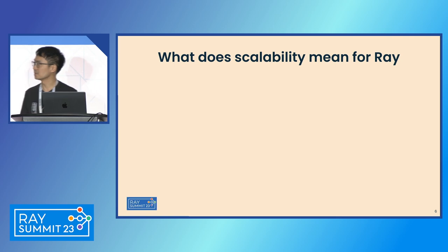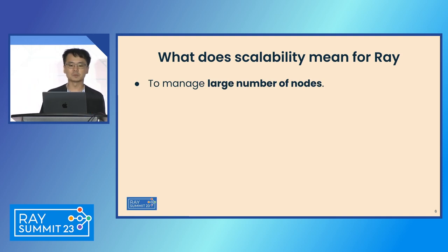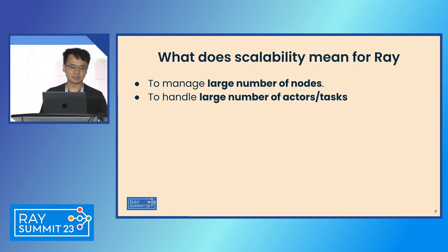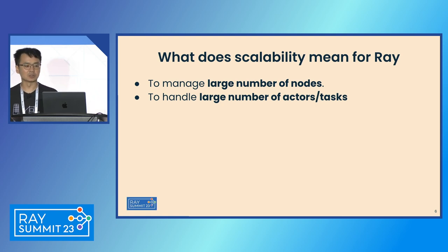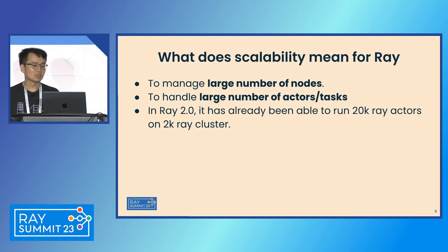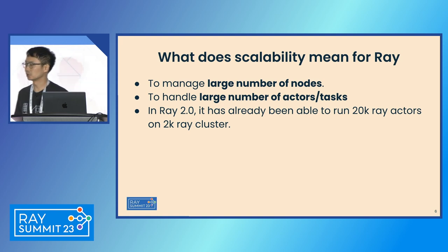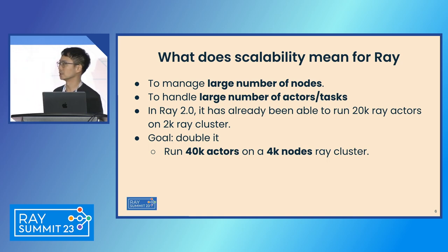But what does scalability mean for Ray? It means Ray needs to be able to manage a large number of nodes, because only with a larger number of nodes can you run large workloads. Inside Ray, it's about having a large number of actors or tasks doing the work. In Ray 2.0, we have already been able to run 20,000 actors on a 2,000-node Ray cluster. Our goal here is to double it — we want to run 40,000 actors on a 4,000-node Ray cluster.